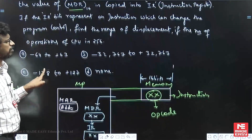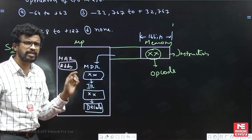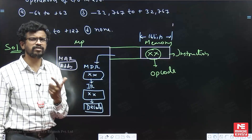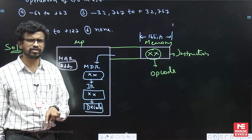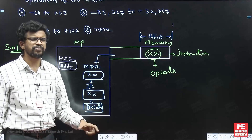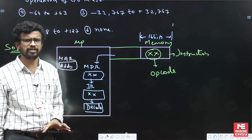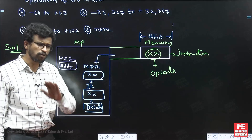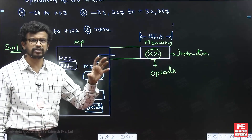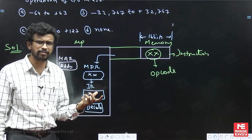In single bus organization, inside the processor the data path will be there. What is data path? It is a combination of different decoders, registers, ALU — everything together is called the data path. How the data flows for a particular instruction through various blocks inside the processor — that is what we call the data path.